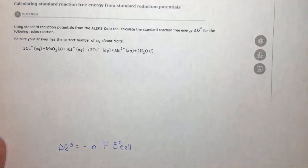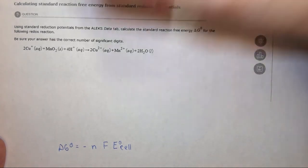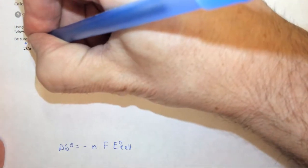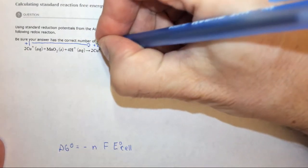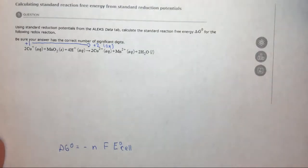First of all we need to figure out what's being oxidized and what's being reduced. If you look at copper here it's going from plus 1 to plus 2, so it's losing electrons, so oxidation is occurring.